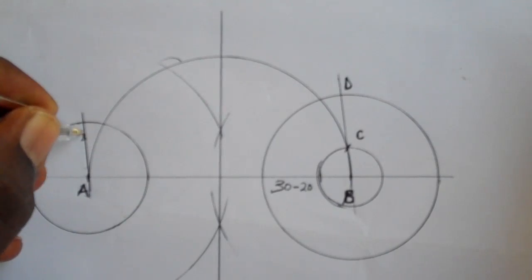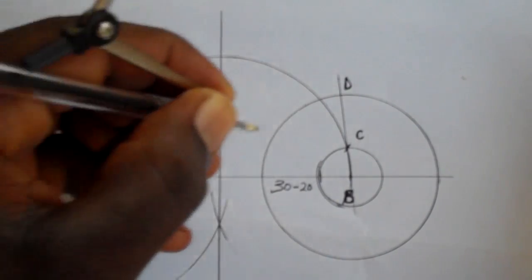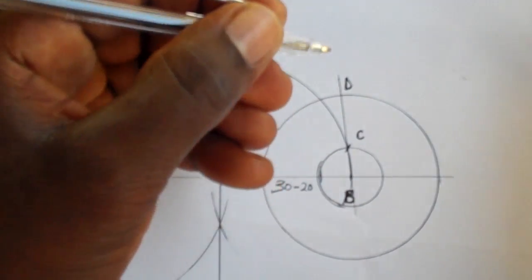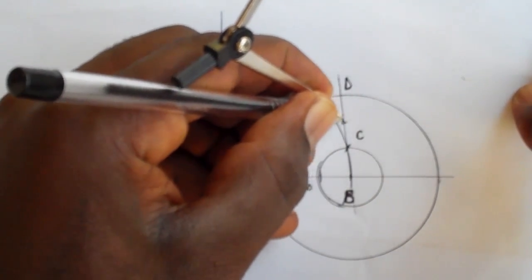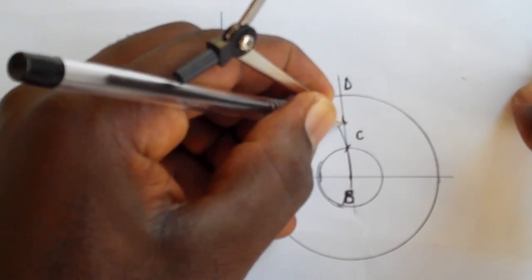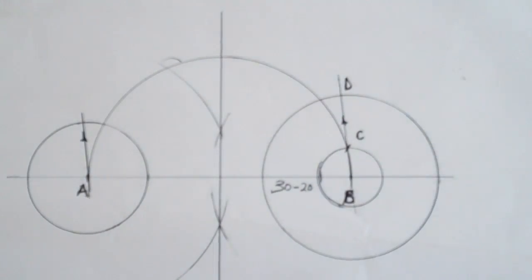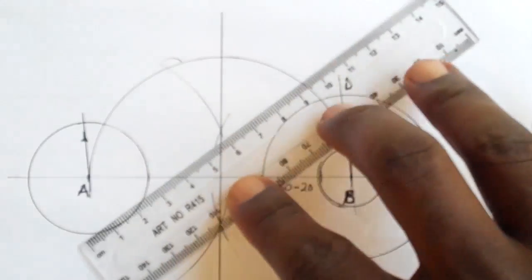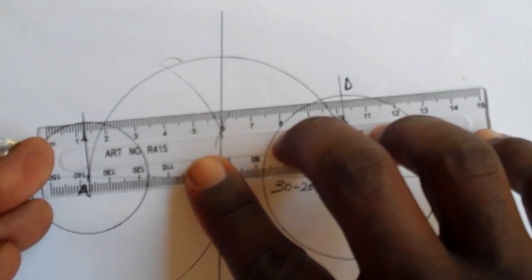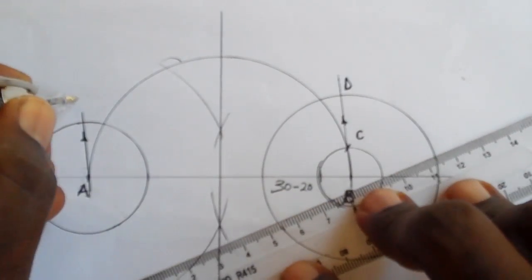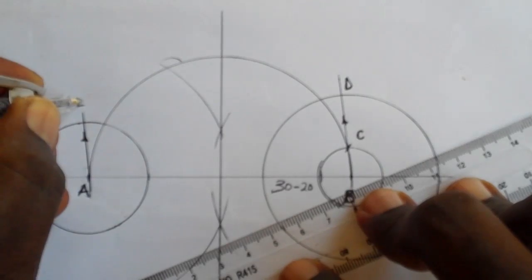So you slide from BD to A and when you draw that line, it's going to give you the other point of tangency on the smaller circle. Next thing you do after that is simply join the points of tangency to finally give you a common external tangent between two equal circles.